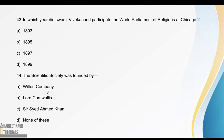Next question: in which year did Swami Vivekananda participate in the World Parliament of Religion at Chicago? The answer is 1893. In 1893, Swami Vivekananda gave his first lecture at the World Parliament of Religion.